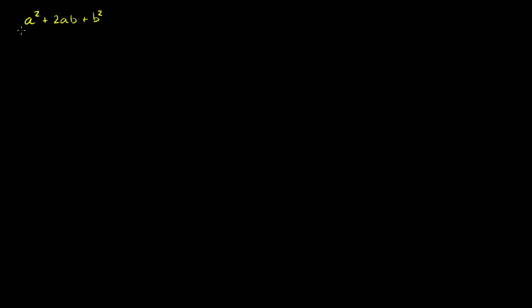Let's do some more work with rational expressions. So let's say I had a squared plus 2ab plus b squared, all of that over ab squared minus a squared b, and we're going to take this and divide it by a plus b.